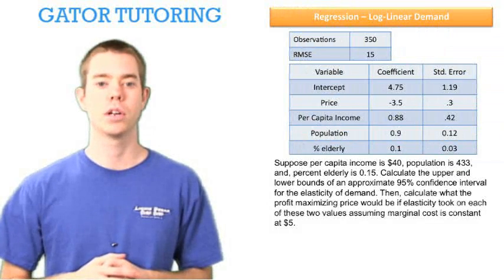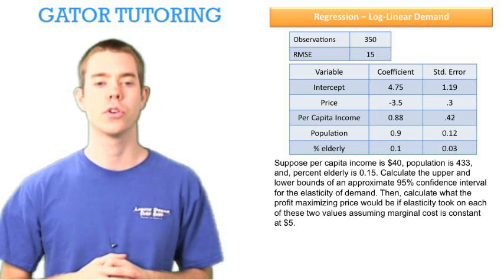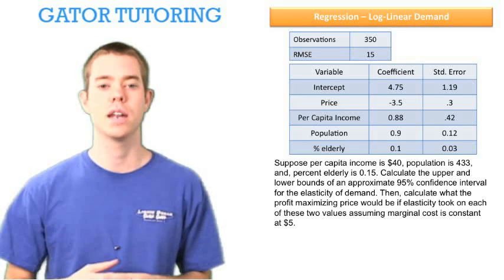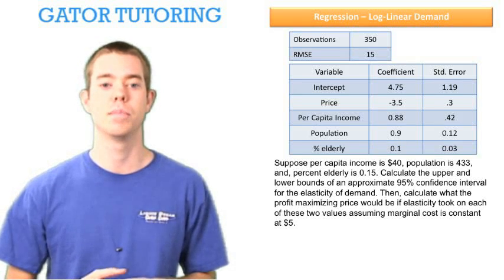Suppose per capita income is $40, population is 433, and percent elderly is 15%. Calculate the upper and lower bounds of an approximate 95% confidence interval for the elasticity of demand.